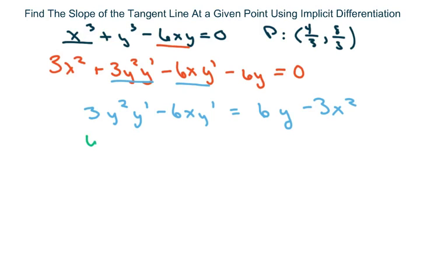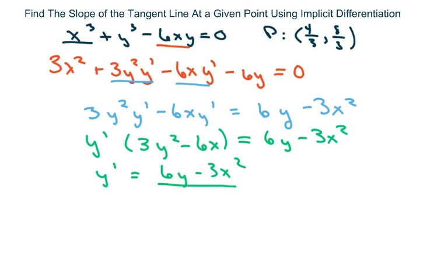Again, we're going to factor out our derivative of the y. So then solve for your derivative. So this would be 6y minus 3x squared over 3y squared minus 6x.